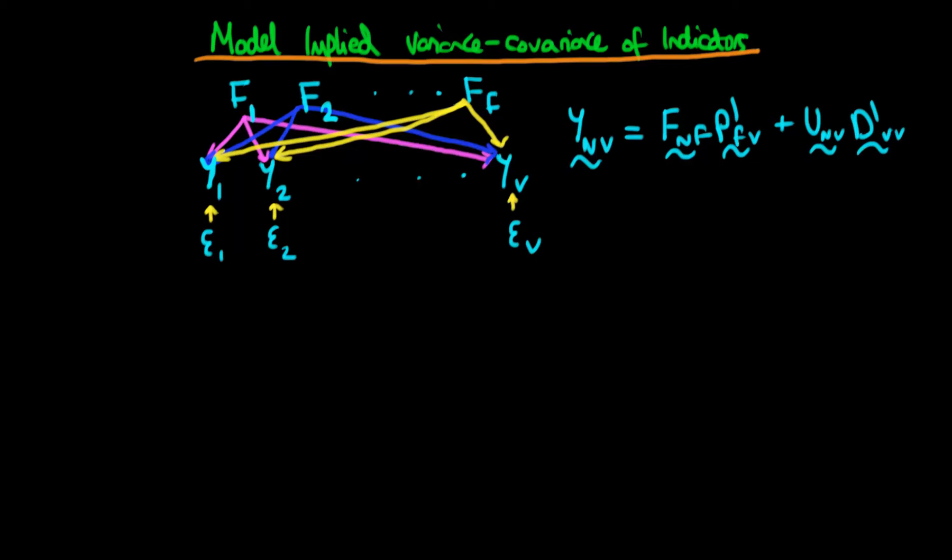In this video, I want to talk about how we can derive the model-implied variance-covariance of indicator variables when we're talking about indicators and factors as being represented in their matrix form.